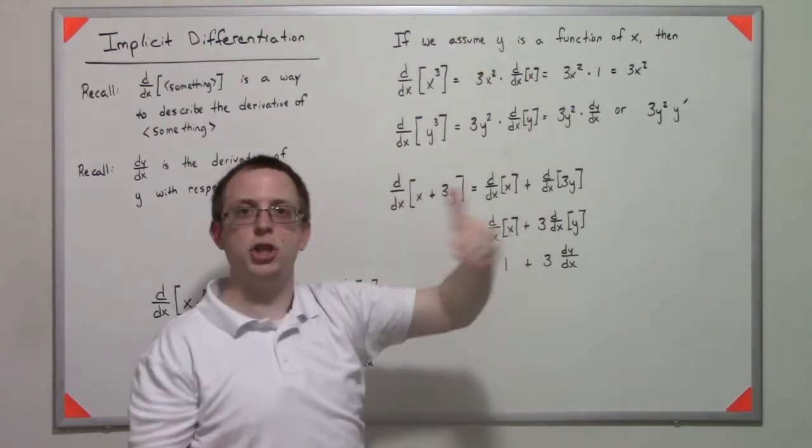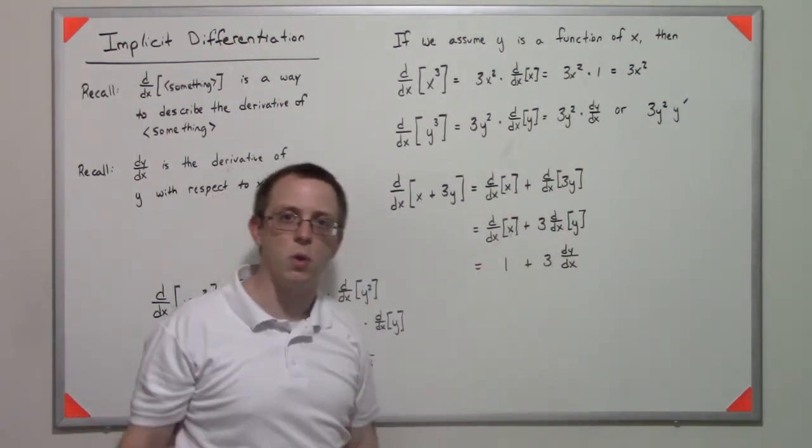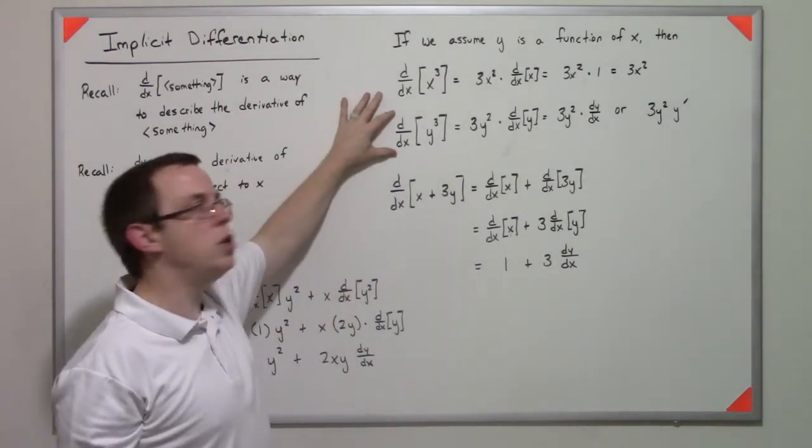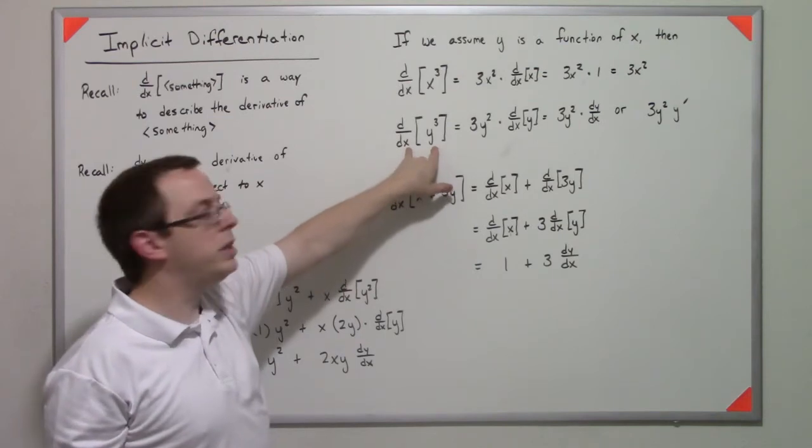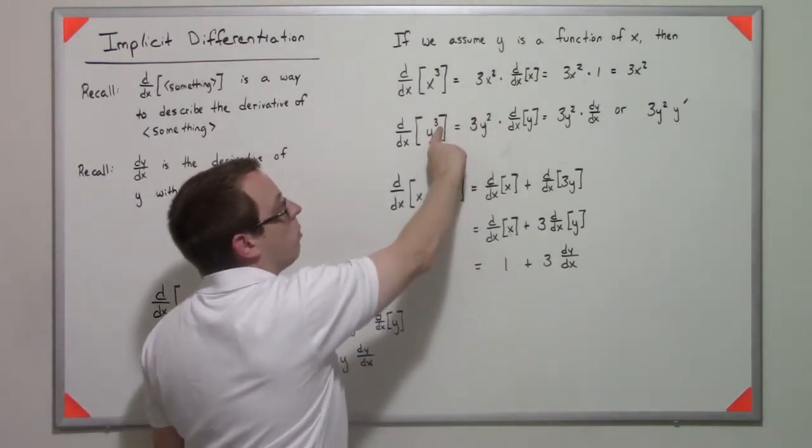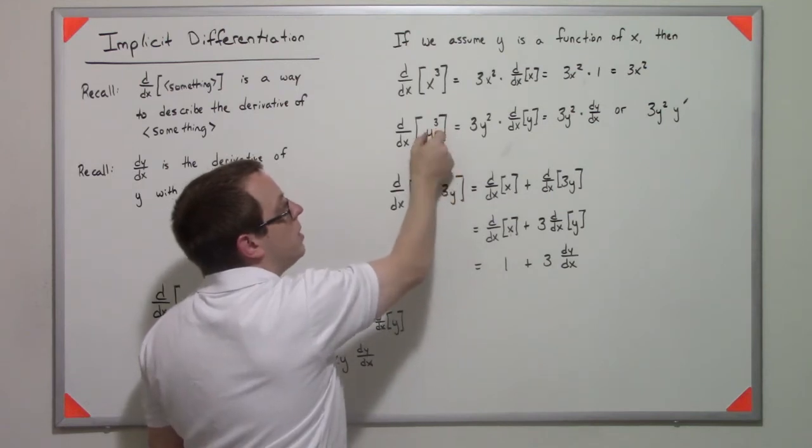Now in the case where you have y³, these letters disagree. So since these letters disagree, we follow the chain rule like normal because this is just some glob there.